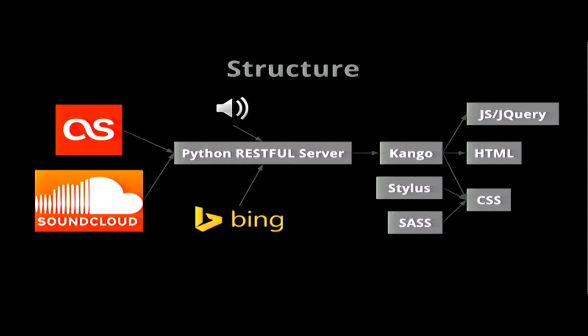Here's the structure of the program. As we can see, I'm pulling in data from Clear, Last.fm, SoundCloud, and Bing Images to allow the service to be as good as possible, and it is feeding into the Chrome extension.